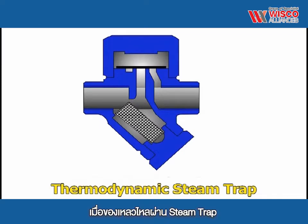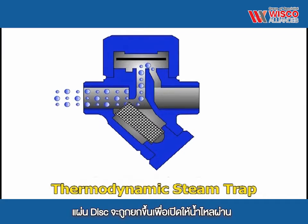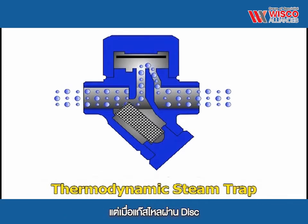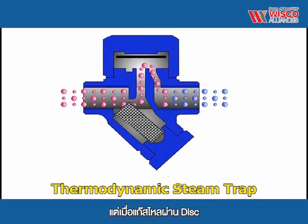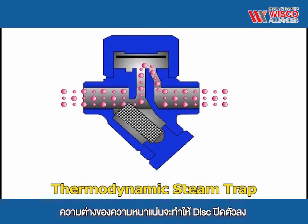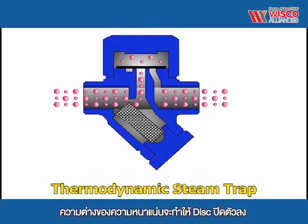When liquid is being passed through the trap, the disc is pushed out of the way of the flow path, allowing free discharge of condensate. However, when steam or air enters the trap, the velocity of the flow increases and the disc is pulled toward the seat.